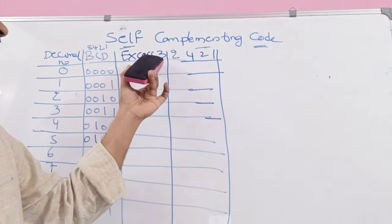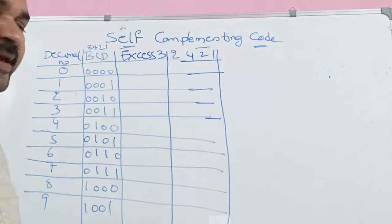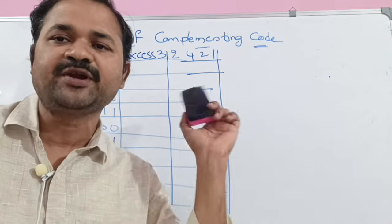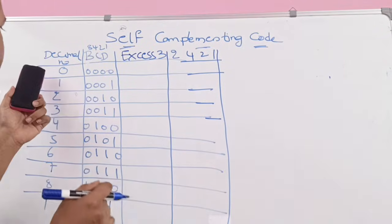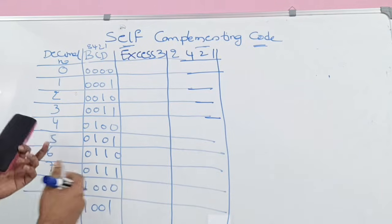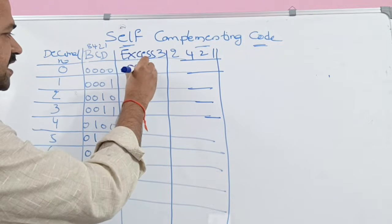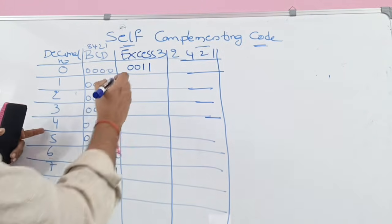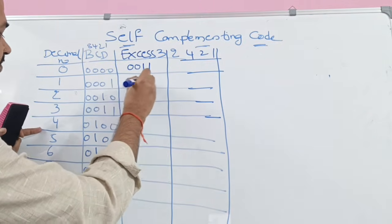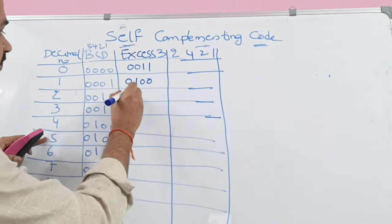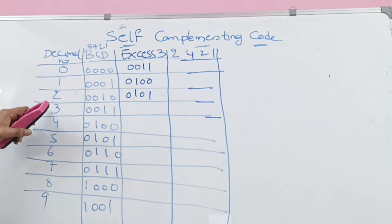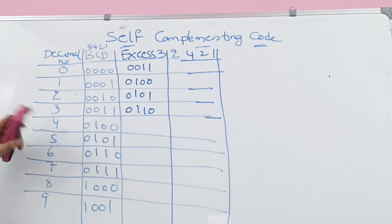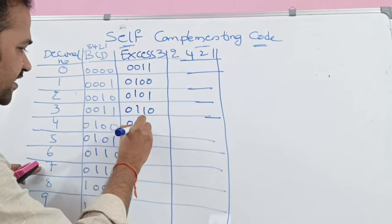Now let us write XS3 code for the corresponding BCD codes. XS3 means we simply add 3 to the corresponding decimal number. For 0, the XS3 code is 0 plus 3 equals 3, so the binary notation for 3 is 0011. For 1, 1 plus 3 equals 4, so 4 means 0100. For 2, 2 plus 3 equals 5, so 5 means 0101. For 3, 3 plus 3 equals 6, so 6 means 0110. For 4, 4 plus 3 equals 7, so 7 means 0111.